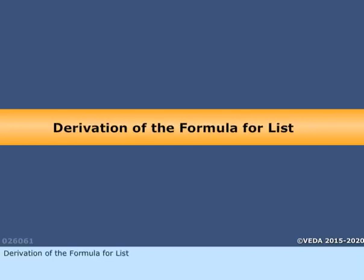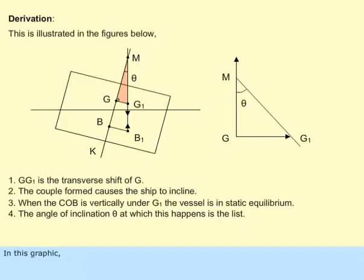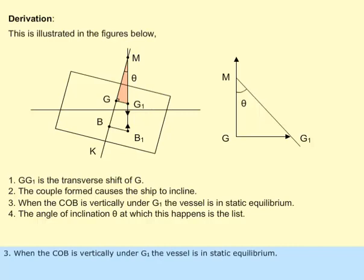Derivation of the formula for list and heeling of the ship. In this graphic, G G sub 1 is the transverse shift of G. The couple formed causes the ship to incline. When the center of buoyancy (COB) is vertically under G sub 1, the vessel is in static equilibrium.